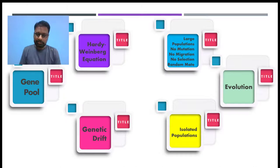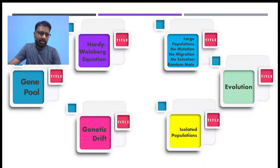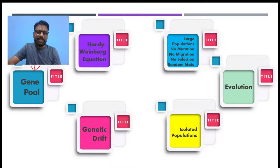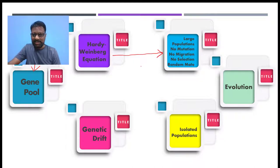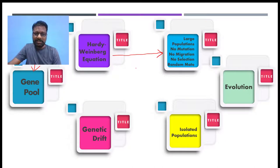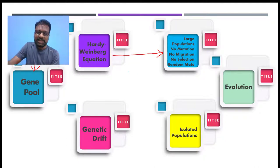Now, when we talk about evolution, the total number of genes present in a population is called the gene pool. The gene pool will always be maintained in equilibrium when no evolutionary forces are taking place — that is, when the population is large, there is no mutation, no migration, no selection, and mating is random. If all these conditions are not met, you will see the process of evolution.